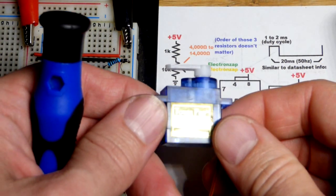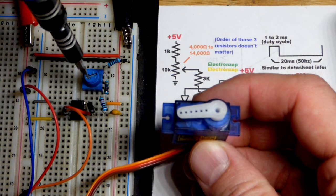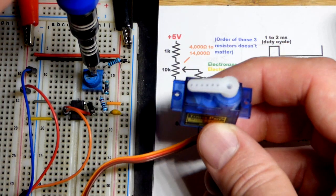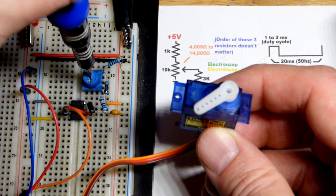In this video we have the SG90 servo wired up so that wherever I turn the trim pot, the servo is going to point in basically the same direction.